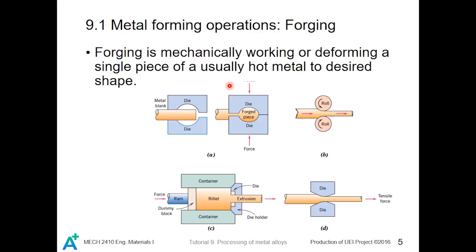The first metal forming operation is forging. Forging is mechanically working or deforming a single piece of usually hot metal to a desired shape. An externally applied force acts through a die onto the hot metal, and due to that force and the shape of the die, the metal can be formed into the desired shape. Other metal forming operations include rolling and extruding.